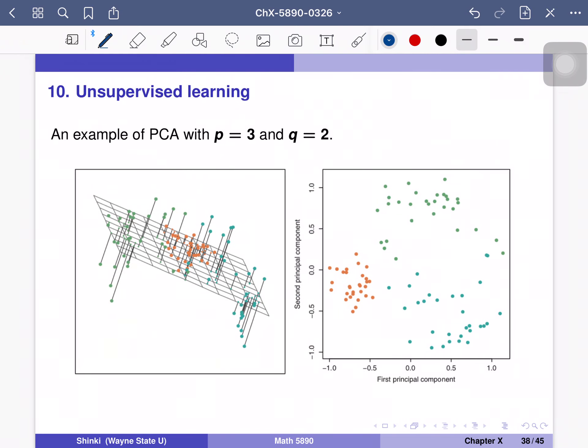So this is another example of PCA with p is equal to 3 and q is equal to 2. This is three-dimensional space, but we want to summarize the data by the two components.